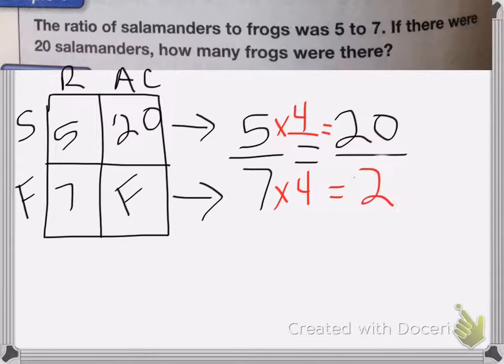So my answer is that there are 28 salamanders, or sorry, frogs, 28 frogs.